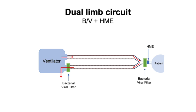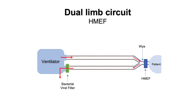As shown in this diagram, that inspiratory filter may be placed next to the HME. When placed next to the HME at the patient Y, this can contribute to significant dead space. But having a bacterial viral filter placed proximal to the patient can be helpful in the event of needing to emergently disconnect the circuit, which is generally to be avoided. An additional option to consider is the use of a combined heat moisture exchanger and bacterial viral filter, commonly referred to as an HMEF.